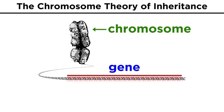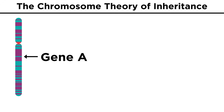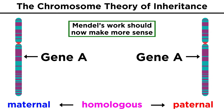They realized that the genes we learned about from Mendelian genetics are actually long stretches of DNA that code for various proteins. These genes have specific locations on specific chromosomes, and each chromosome in a homologous pair has the same gene at the same spot. This new understanding explained all of Mendel's observations.